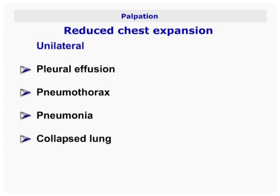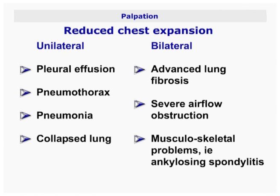Expansion may be reduced unilaterally in a collapsed lung. If expansion is reduced bilaterally, then this may signify advanced lung fibrosis or severe airflow obstruction.